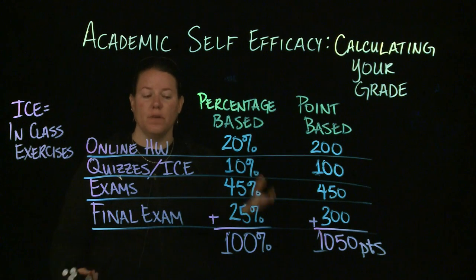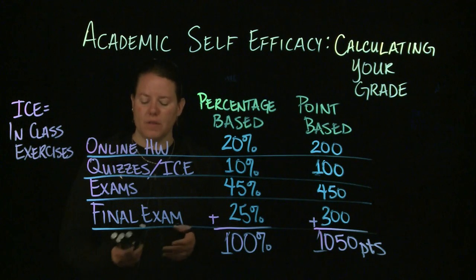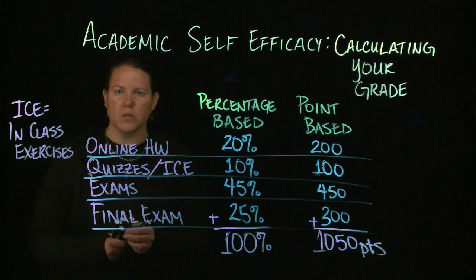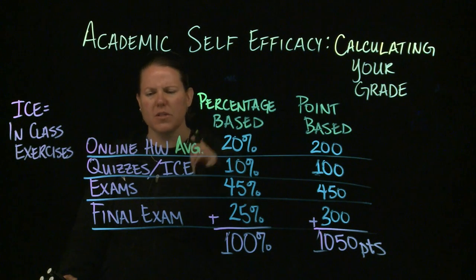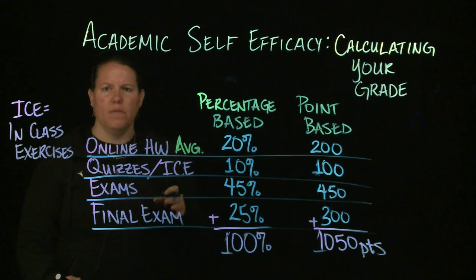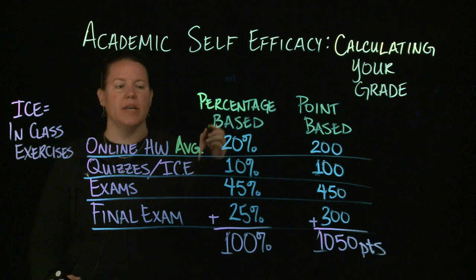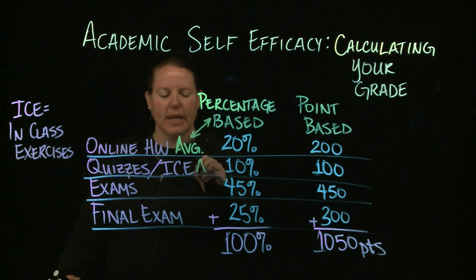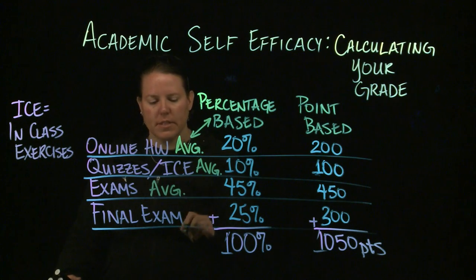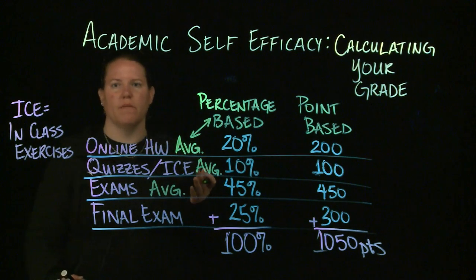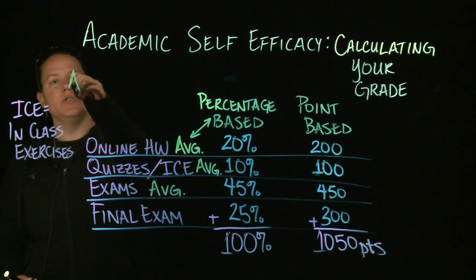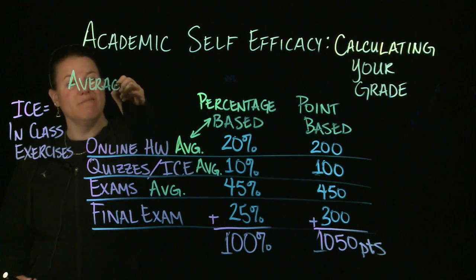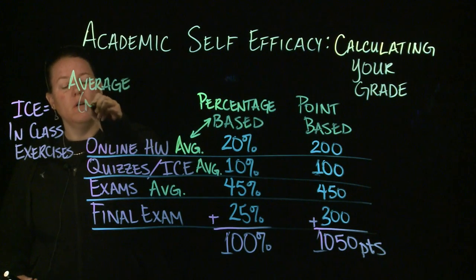Then, based off of what your score is, often when we're talking about final course grades, we're talking about averages here. We're talking about the average of the online homework. In percentage-based, we're talking about taking an average and then multiplying it by a percent. When we take an average or a mean, those are the same things.